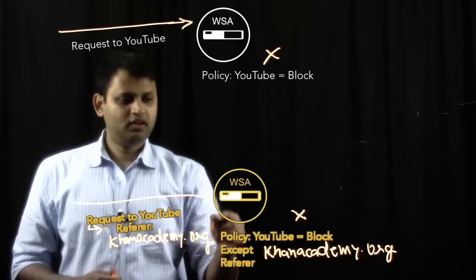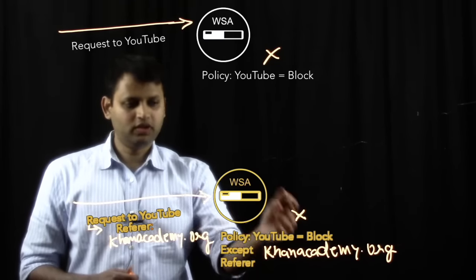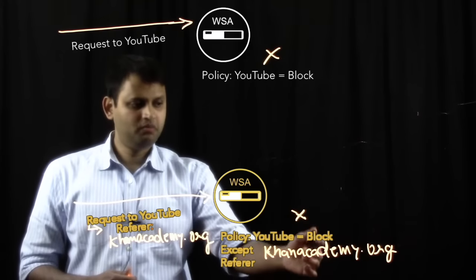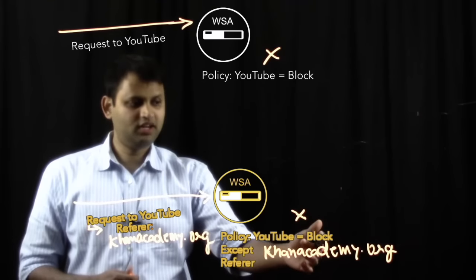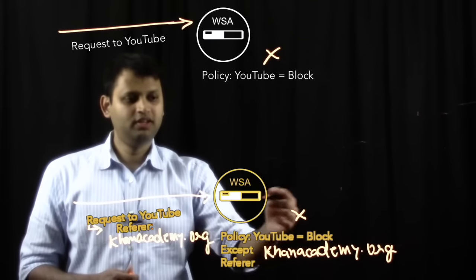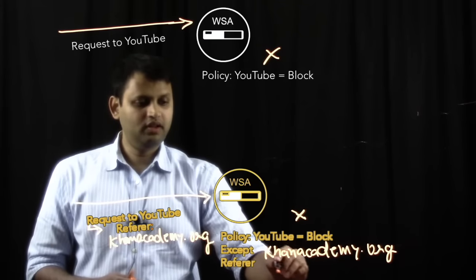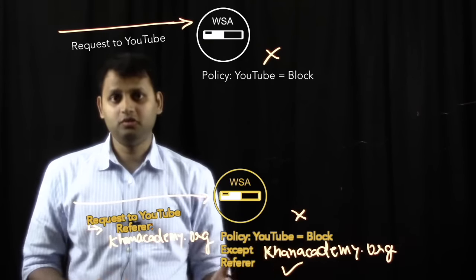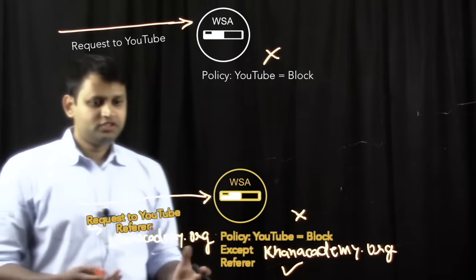It comes to the WSA. The WSA says that this is a YouTube.com request, but the referrer header is Khanacademy.org. It evaluates that and then it allows this request and it goes through. So very powerful stuff.